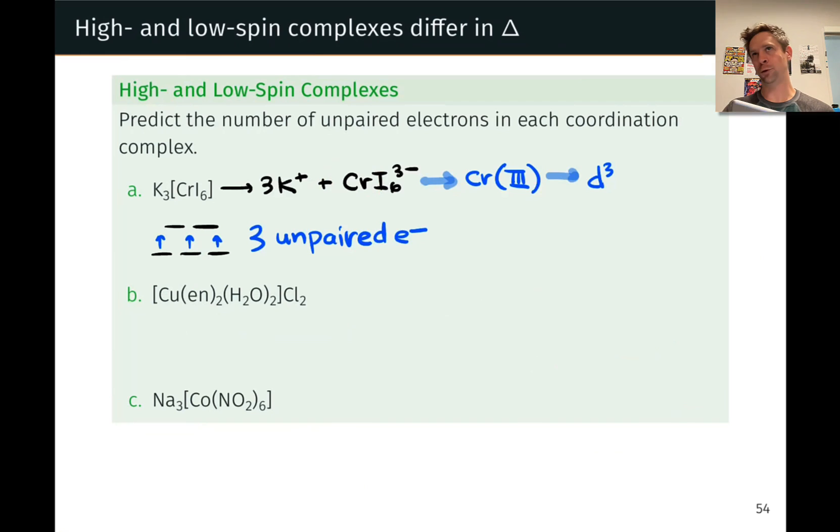There is not even a high or low spin issue since we're going to follow Hund's rule and put all of the electrons in the lower energy t2g orbitals, not even having to worry about high spin or low spin. So we'd end up with three unpaired electrons, one each in each of the t2g orbitals in accordance with Hund's rule. Simple as that.